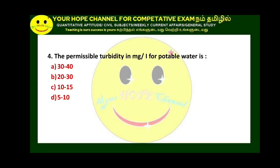Potable water is not only for drinking purposes but also for other domestic purposes like washing clothes. As per IS standard, the turbidity limit is 1 to 5 for acceptable limit and 5 to 10 for permissible limit. The acceptable limit is 1 and the permissible limit is 5.